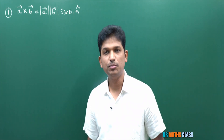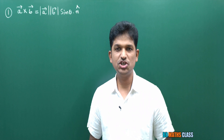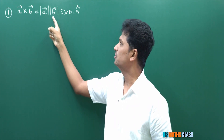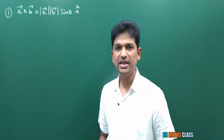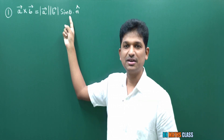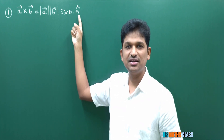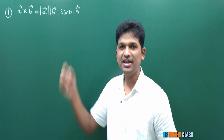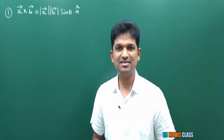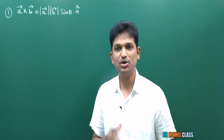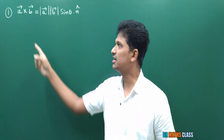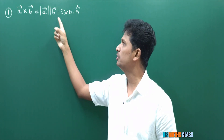This is the first formula we learned from the definition of cross product of vectors. A bar cross B bar is defined as magnitude of A bar into magnitude of B bar into sine theta into n cap. In this formula, theta is the angle between vectors A bar and B bar. N cap is the unit vector such that A bar, B bar, n cap forms a right-hand system of vectors.